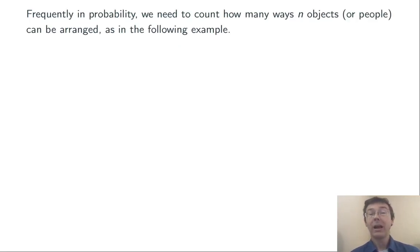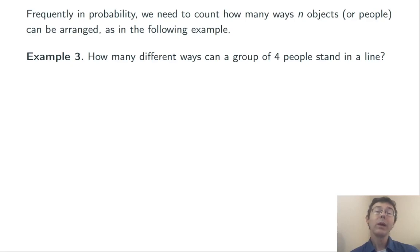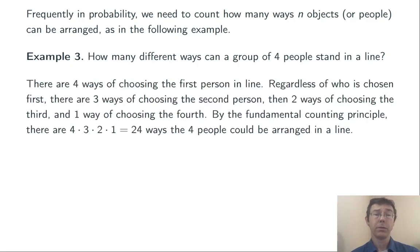Often we need to count how many ways n objects, or people, or whatever, can be arranged, like in this example. How many different ways can a group of four people stand in line? In other words, how many different ways can we order those four people?